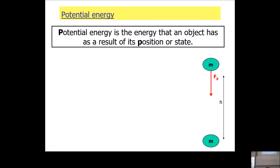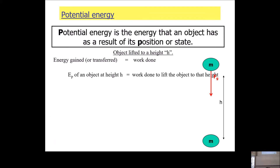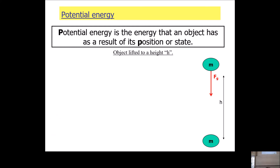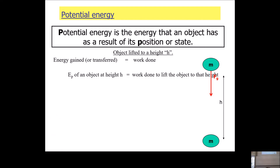Let's say you've moved it over height h using a force fg. How much work have you done? The energy transferred is equal to the work done, because energy and work are two sides of the same coin. The work formula is force times displacement. If you're going in the same direction, cos theta equals one, so work is just F times delta x.